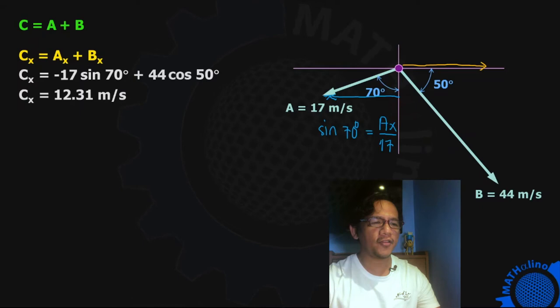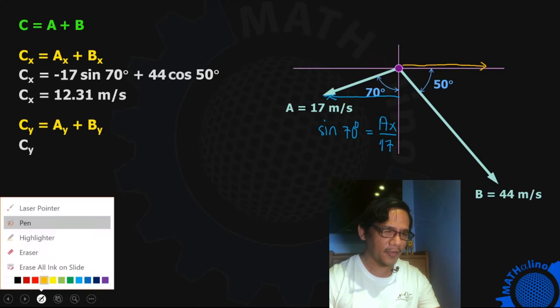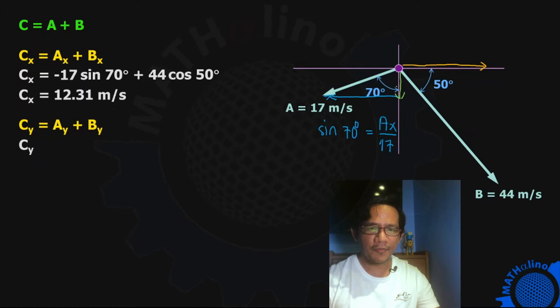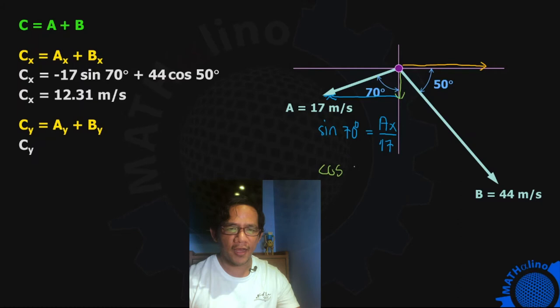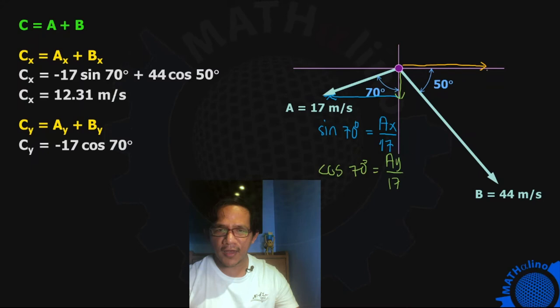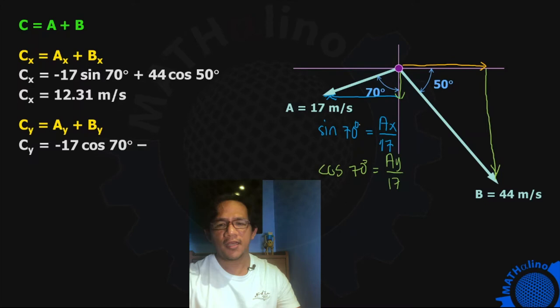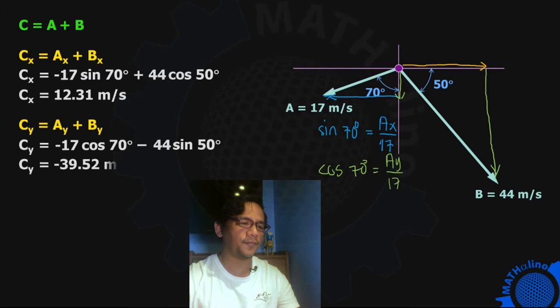For the vertical component of C, let us sum up AY and BY. For AY, cosine of 70 degrees equals AY over the hypotenuse 17, because AY is adjacent to the 70-degree angle. AY is downward, meaning negative: negative 17 cosine of 70. BY is also downward, so also negative. The angle is measured from the horizontal, so we use sine: minus 44 sine of 50 degrees. Using your calculator, we have CY equal to 39.52 meters per second.